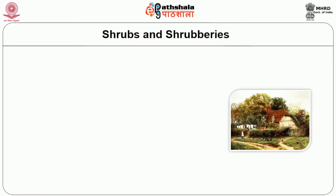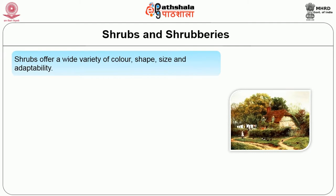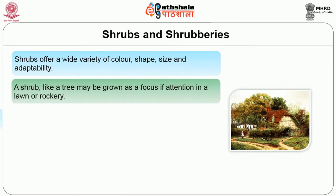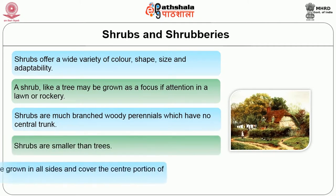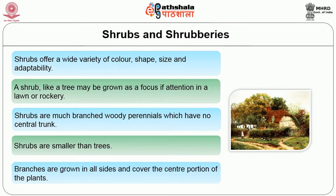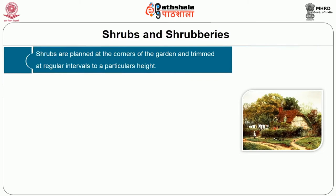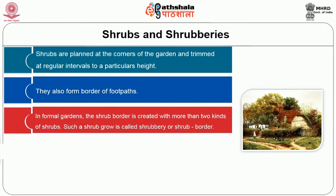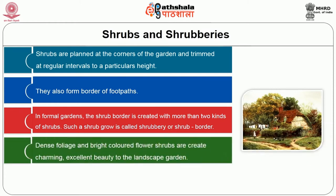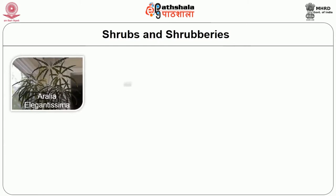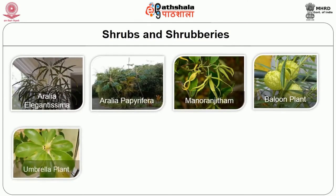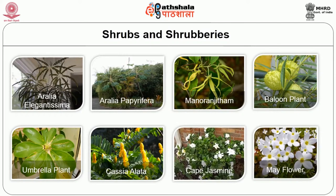The second one is shrubs and shrubberies. Shrubs offer a wide variety of color, shape, size and adaptability. A shrub, like a tree, may be grown as a focus of attention in a lawn or rockery. Shrubs are much-branched woody perennials which have no central trunk and are smaller than trees. Branches are grown in all sides and cover the central portion of the plant. Shrubs are planted at the corner of the garden and trimmed at regular intervals to a particular height. They also form borders along footpaths. A growth with more than two kinds of shrubs is called shrubbery or shrub borders. Dense foliage and bright-colored flower shrubs create charming, excellent beauty to the landscape garden. The shrubs may be evergreen or deciduous. Important shrubs used are Aralia elegantissima, Aralia fabrica, Manorangitham, balloon plant, umbrella plant, Cassia alata, cape jasmine, mayflower. Shrubs are always resistant to pests and diseases.